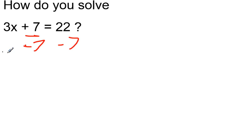Subtracting 7 on both sides, on the left-hand side it cancels out and leaves me with 3x. Whereas on the right-hand side, 22 minus 7 is equal to 15.